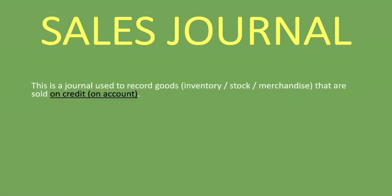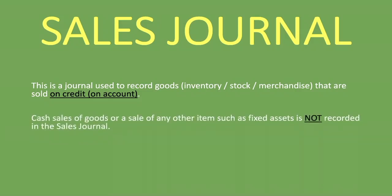So what do we record in the sales journal? This is a journal used to record goods — which is inventory, stock, or merchandise — that are sold on credit or on account. We're only recording goods sold on credit or on account. We do not record goods sold on cash. Cash sales, or a sale of any other item such as fixed assets, is not recorded in the sales journal. We're only recording goods sold on credit.